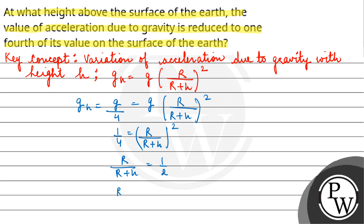h equals 1 by 2, R plus h equals 2R, h equals R which is equal to the radius of the earth equals to 6400 km.